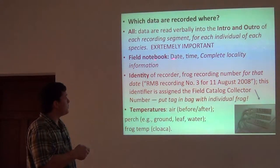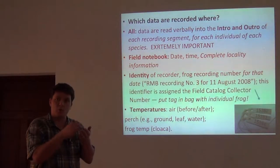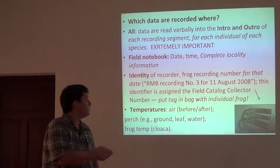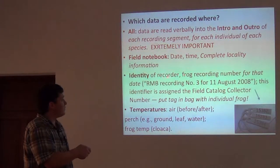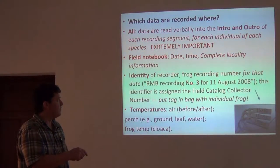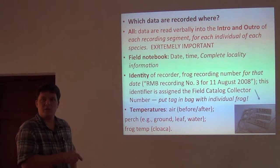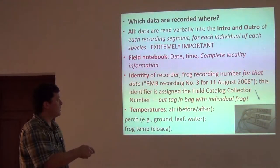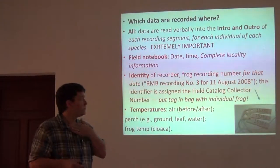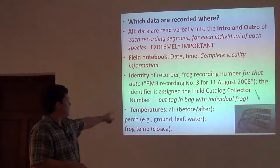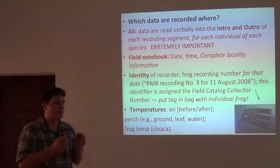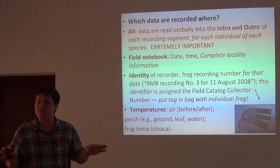The field notebooks — you write down all this information into your notebook that you're carrying around with you in the field, and that data will be transcribed the next day into your catalog. You'll write down the identity of the person recording. The format I like is to have numbered recordings for yourself on a particular date. When you put that into your catalog, all you have to write down is R&B recording number three, because you've already at the top of the page said this is the 11th of August 2008. You can put the numbers of your field tags in the bag with it so that every single frog has that unique identifier and never becomes separated from it.